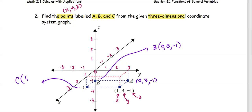For point C, in the y direction it looks like zero units away from the origin. Then for z, it's one unit away from the origin in the z direction but in the negative direction. So the label for point C is one, zero, negative one.